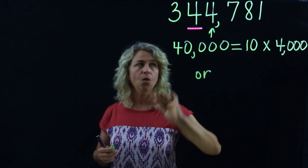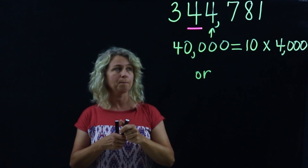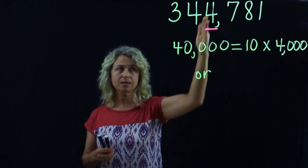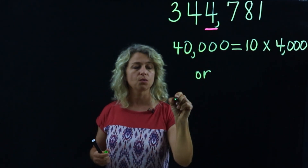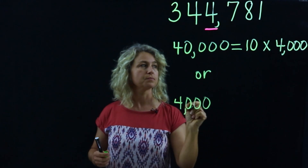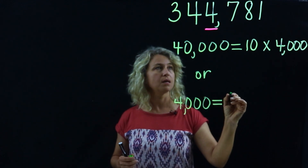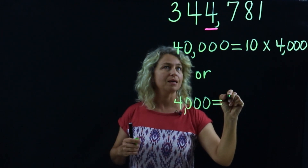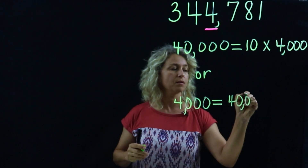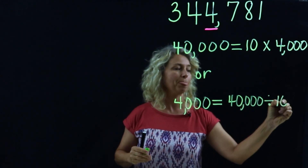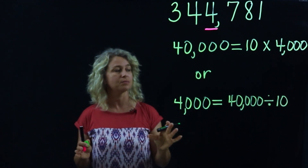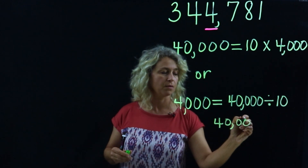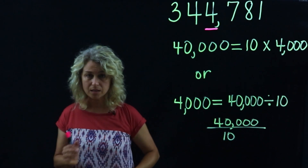Now let's see the reverse. Let's underline this digit. This four is worth four thousand. We could say: four thousand is one tenth — that is, forty thousand divided by ten. Let's see if this makes sense: forty thousand divided by ten equals four thousand. So another way to write this is forty thousand divided by ten equals four thousand.